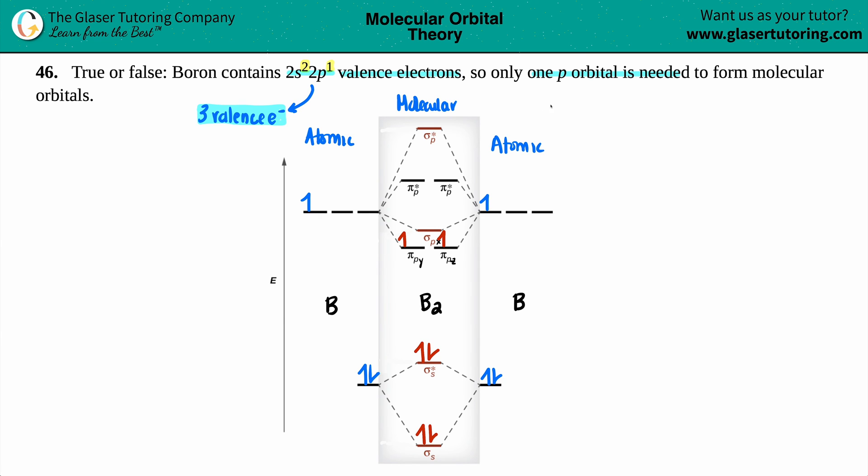So true or false? Only one p orbital is needed? Not here. I need two distinct p orbitals. This is false. Two p orbitals are needed. Specifically, I need a py and a pz to make the pi py and pi pz molecular orbital. So this one is a falso.